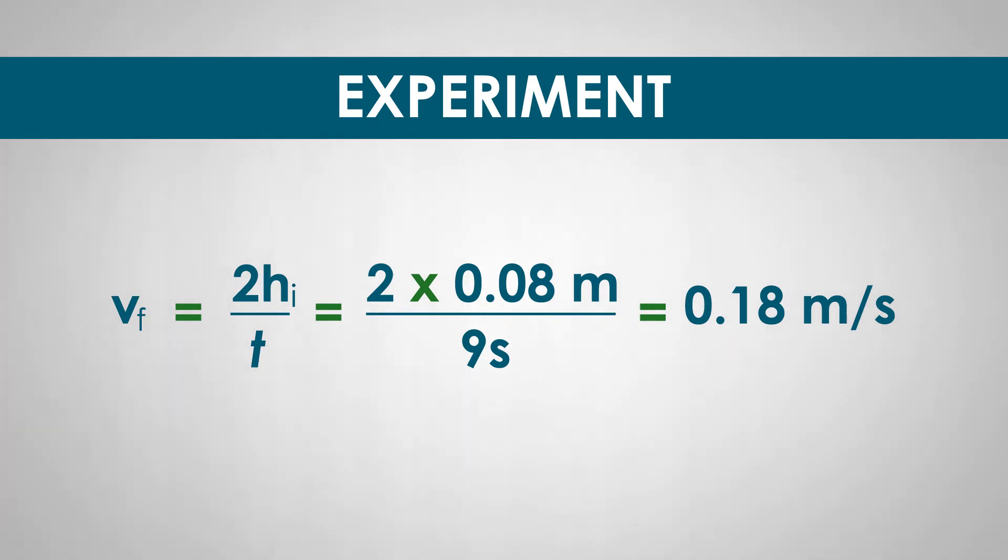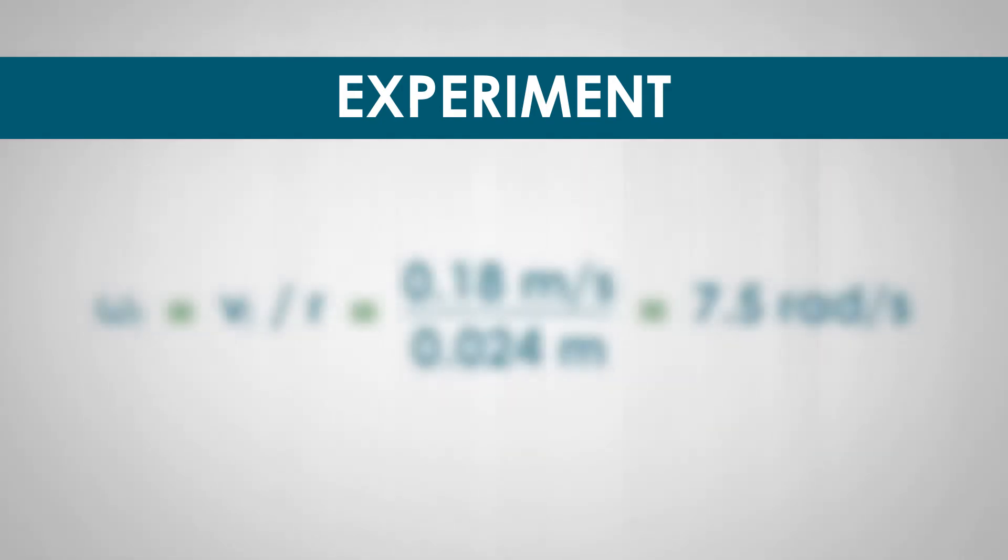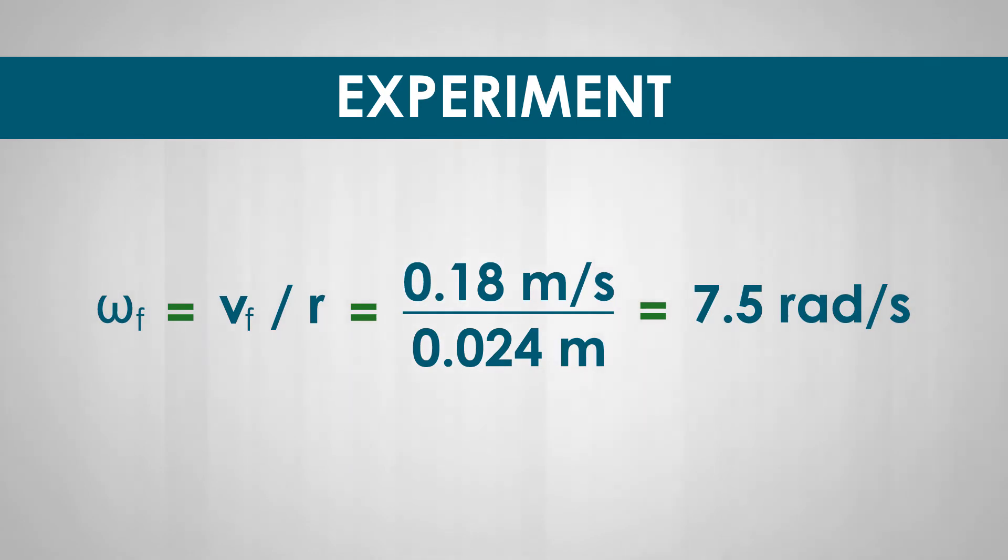So, our V final turns out to be 0.18 meters per second. Final angular speed of disk, omega final, can be obtained using omega final equals V final over R, where R is the radius of the spindle in the rotary table around which the string is wrapped. That radius R is 2.4 centimeters or 0.024 meter. So, omega final is 7.5 radians per second.